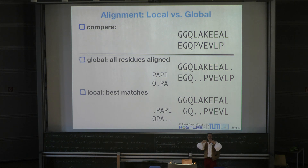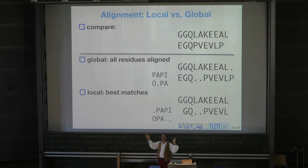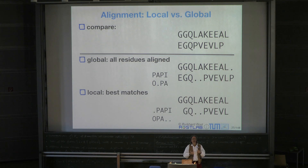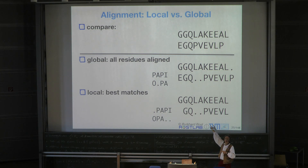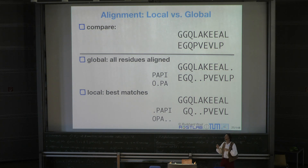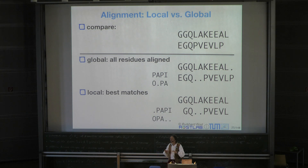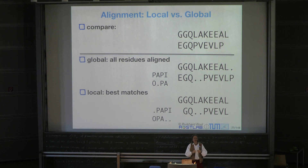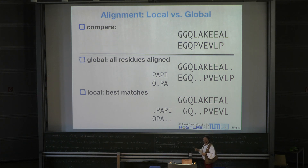I defined optimal as the percentage of identical letters, but even that is not the complete definition. We have two sequences, and under the line you see the global solution and then a local best match. The global solution requires that you align the first and last residues and match everything else optimally. By the criterion of percentage of identical letters, in the local alignment you're allowed to find a locally similar region. The dots mean an insertion—one of them is longer.